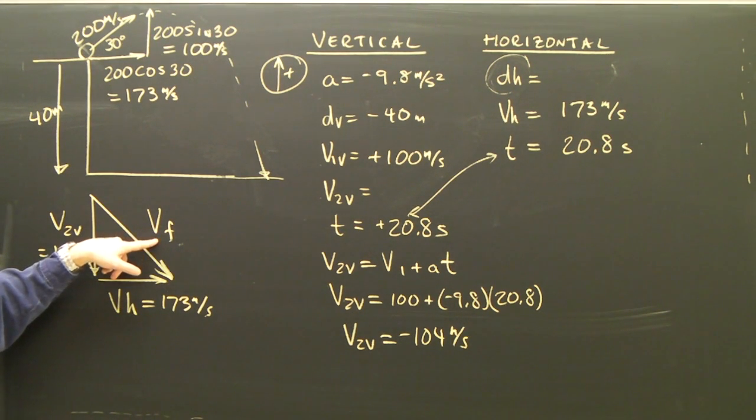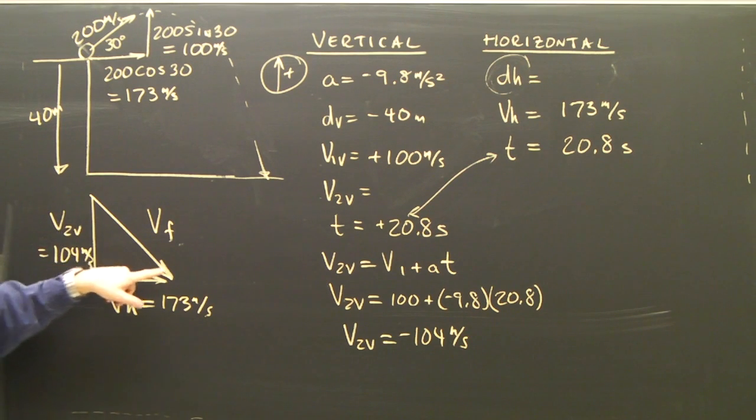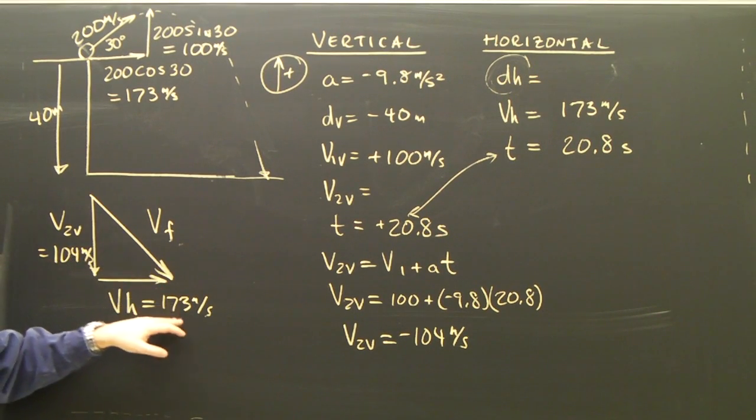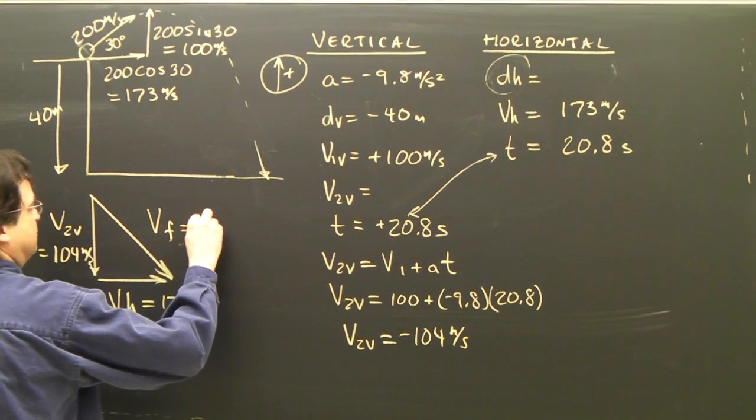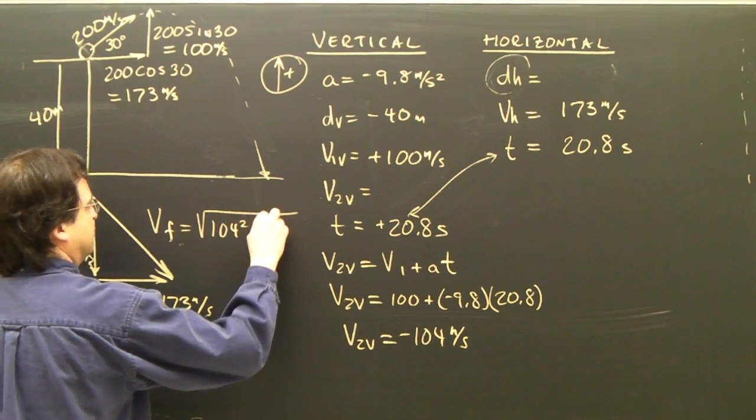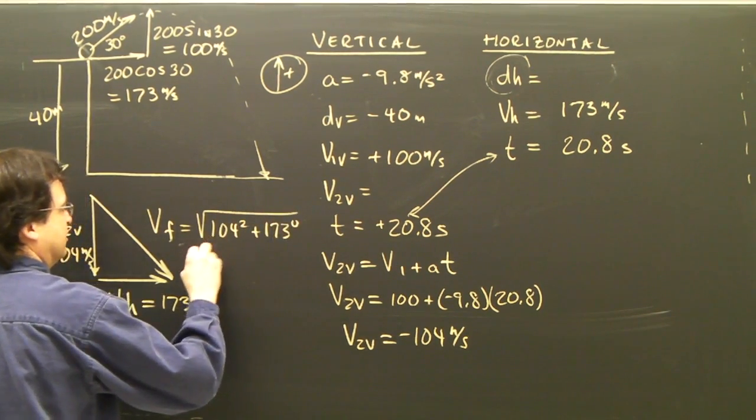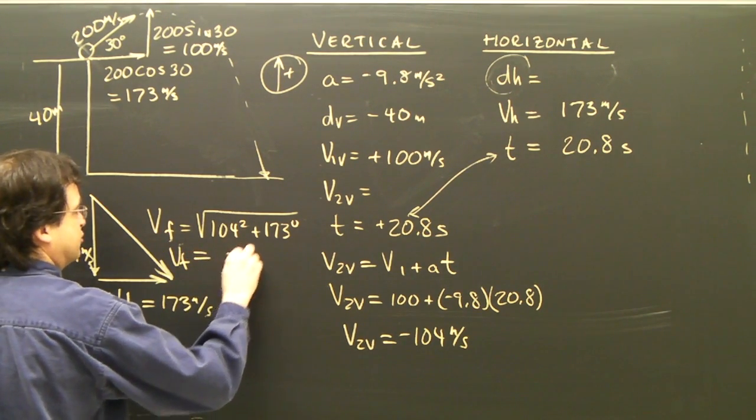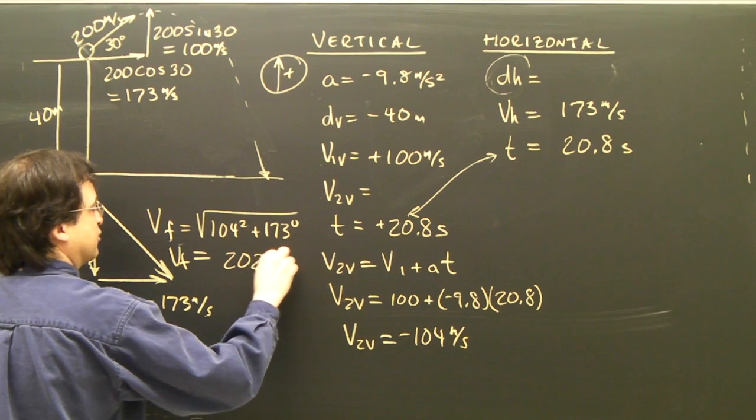So to find VF, what do I do? Well, I've got a triangle. It's a right-angled triangle. I can use Pythagoras. So the final velocity is going to be 104 squared plus 173 squared, take the square root. My final velocity is 202 meters per second.